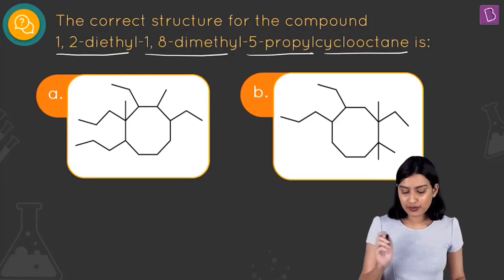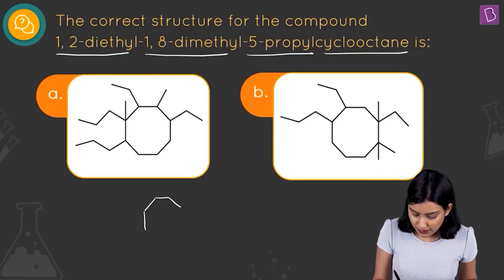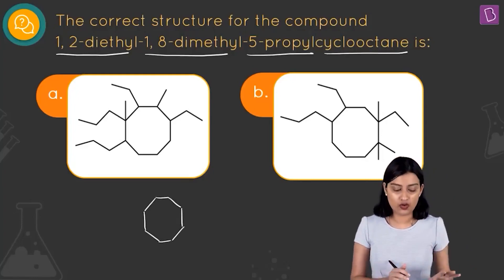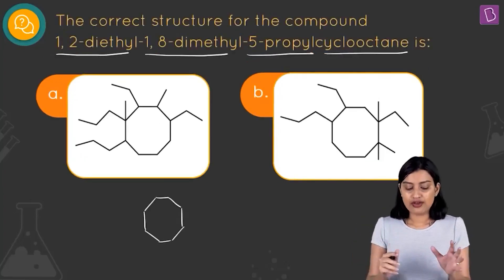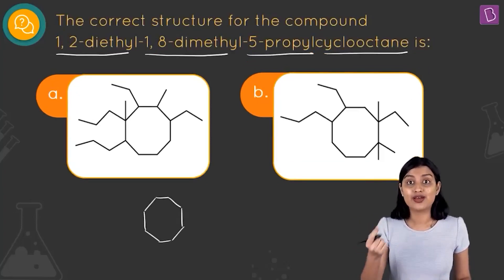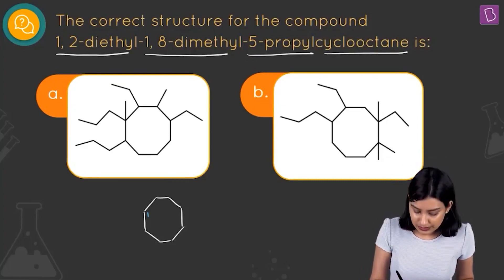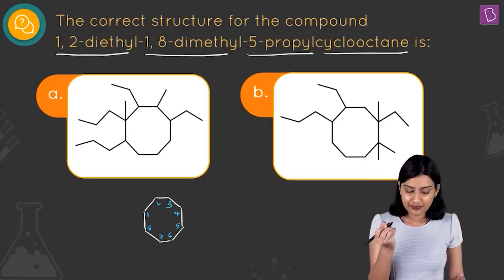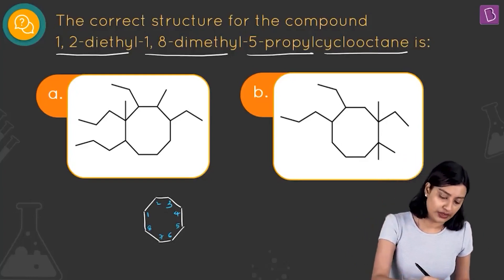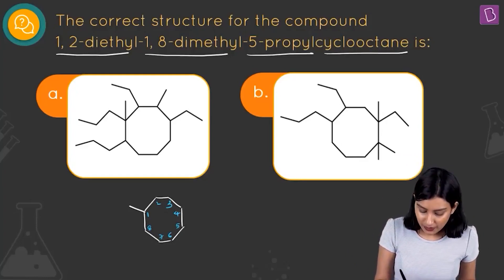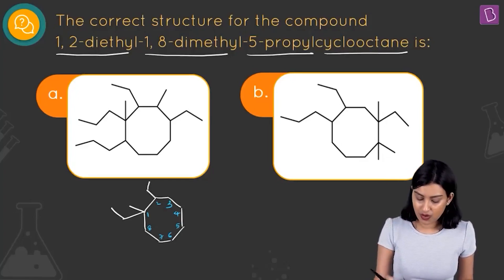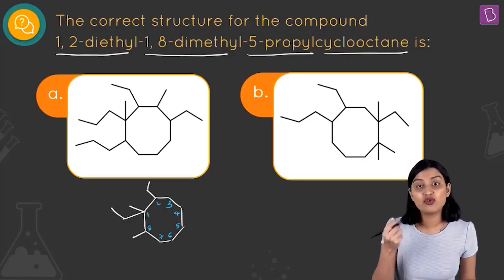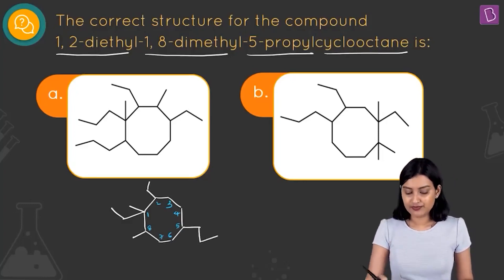Instead of a base chain we have a base ring because we are talking about a cyclo compound — cyclooctane: 1, 2, 3, 4, 5, 6, 7, and 8. All the options have a cyclooctane ring. Now placing the substituents: on carbon 1 we have one methyl and one ethyl; on carbon 2 we have an ethyl; on carbon 8 we have a methyl; and on carbon 5 we have a propyl — one, two, three carbons.